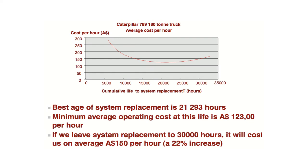This example cost graph comes from the master's degree study of Jasper Coetzee in 1997. It was subsequently used in a conference paper at the 1997 ICOMS conference in Australia, and thus the Rand values were converted into Australian dollar values. It was based on a data set of a Caterpillar 789 180-ton truck at Sasol's Sigma Colliery in Trichardt, Mpumalanga. It showed that based on the data of minimal repairs and cost data, the truck should be replaced at 21,293 hours to optimize the lifetime cost per hour.